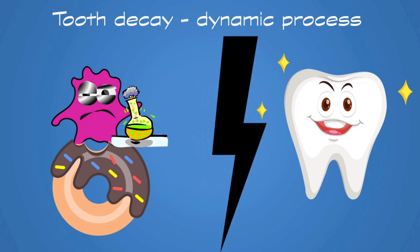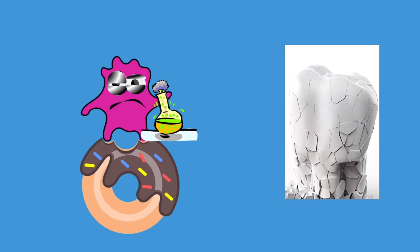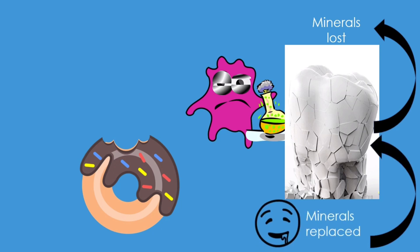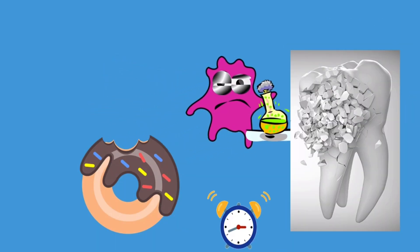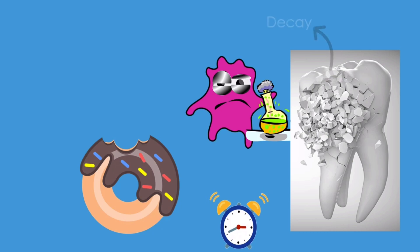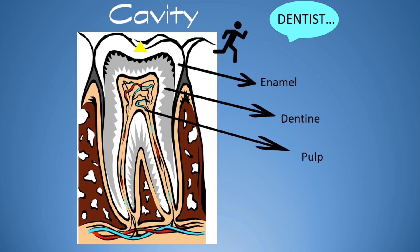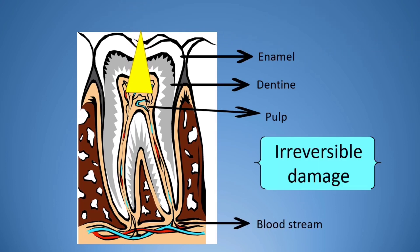Tooth decay is a dynamic process — there is a constant war going on between the bugs and the tooth. Let me show you how the acid attack happens. Every time we eat any sugary or starchy food, on every acid attack the tooth loses minerals. However, our mouth tries to fight back — saliva tries to restore the lost minerals. But if this acid attack happens repeatedly, the tooth doesn't get enough time to heal and hence loses the battle. The outermost layer of the teeth, called enamel, is the strongest substance in the body. If the bugs are successful in destroying it, it won't take long for them to reach the inner layers, and once that happens it's not reversible. Only in the initial phase is it possible to reverse decay.